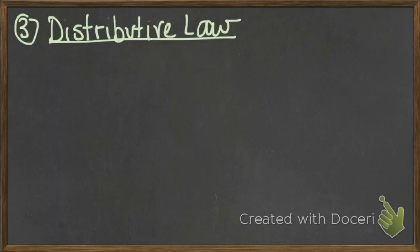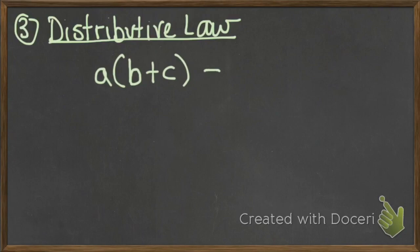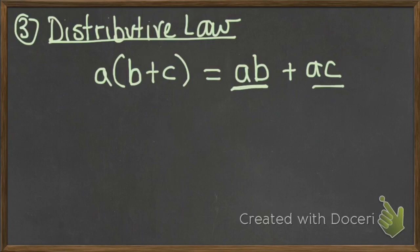This is very important when it comes to BEDMAS order of operations. Essentially, if you have something on the outside of a bracket where addition or subtraction is happening inside the bracket, we can distribute that A inside, and we get A times B plus A times C. The letters side by side imply multiplication. So if we have a letter hugging a bracket on the outside, we multiply it to each of the numbers or letters inside the bracket.